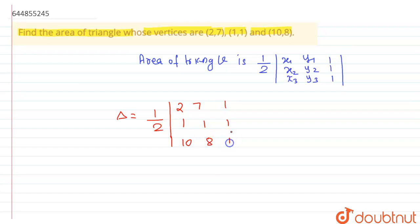Clear up to now? So now we have to solve it. We can directly solve it students, or we can use some transformation to solve it easily. So I can use two row transformations here. I can write R1 changes to R1 minus R2 and R2 changes to R2 minus R3.